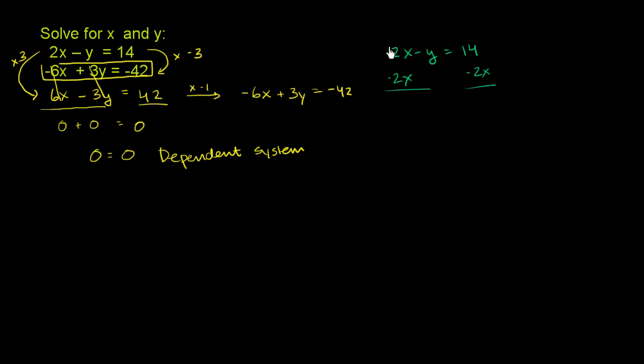On the left-hand side, you're left with just negative y. On the right-hand side, you have negative 2x plus 14. Multiply both sides by negative 1. And you get y is equal to 2x minus 14.